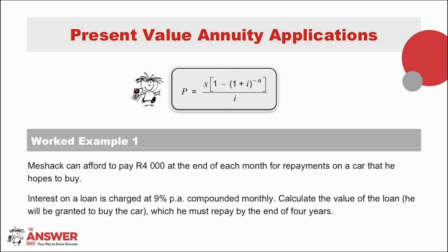This is a simple case where you have to decide which values go with which parameter in the formula — which value goes for X, which goes for i, and which for N. Why don't you pause the video here to give it a try on your own first, before moving on to see the solution.